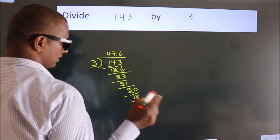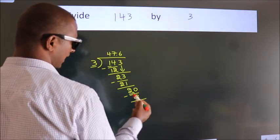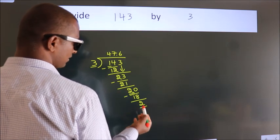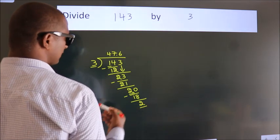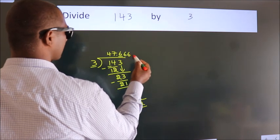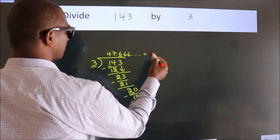Now you observe, we had 2 here and we got 2 again. That means this number keeps on repeating. So this is our quotient.